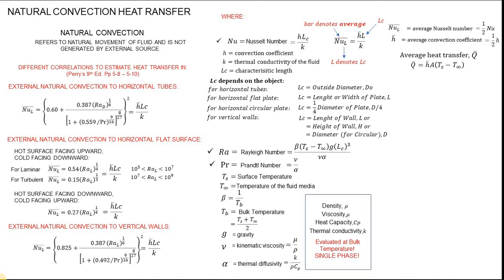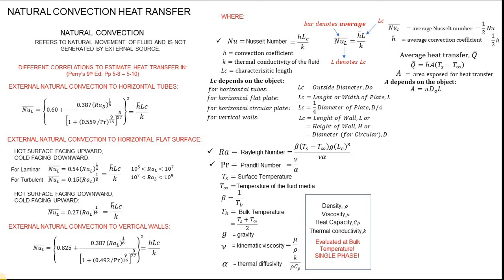To evaluate the heat transfer rate Q, it is equal to the convective coefficient times area times (Ts minus T-infinity). Area depends also on the configurations of flow. For a horizontal tube, area is pi times outside diameter times length. For others, it depends on the area of the plate exposed to heat transfer.